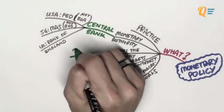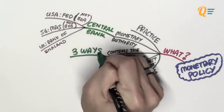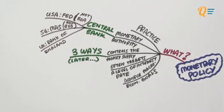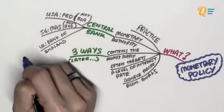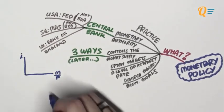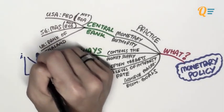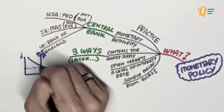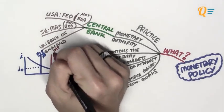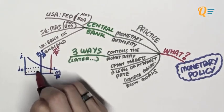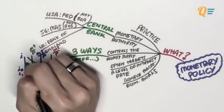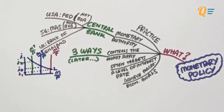When we talk about controlling the money supply, there are actually three ways the central bank can do this, which we'll cover later. To understand what it means to control the money supply, let's look at the money market diagram. The money supply curve is the vertical straight line. Increasing the money supply shifts it right, bringing interest rates down; reducing it shifts it left, bringing interest rates up.